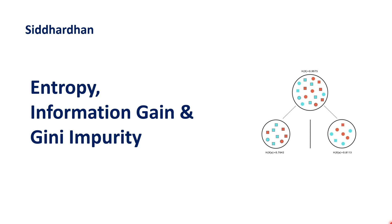Hello everyone, I am Chidharthan. In the previous video I explained the intuition behind a decision tree model, and in today's video we are going to discuss three main important concepts: entropy, information gain, and Gini impurity. These three measures are very important while building a decision tree model, and today we will understand how they are helpful and what each individual term means.